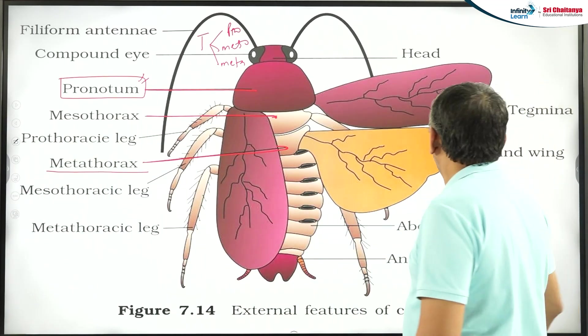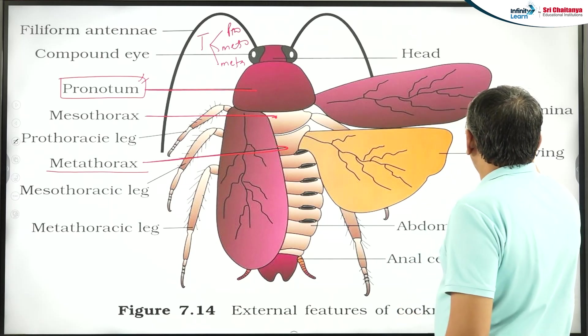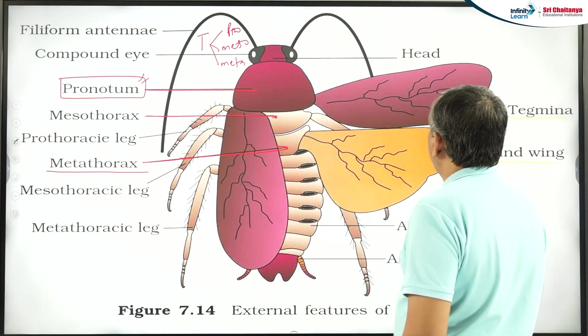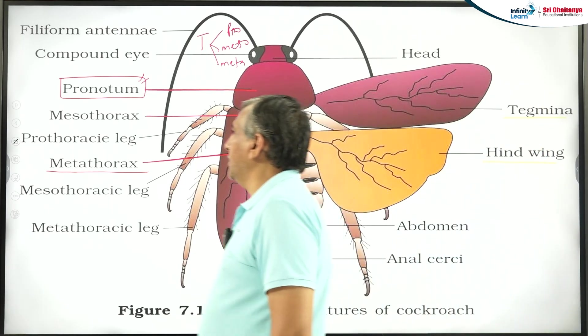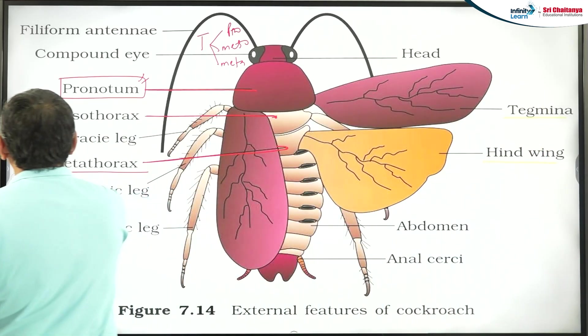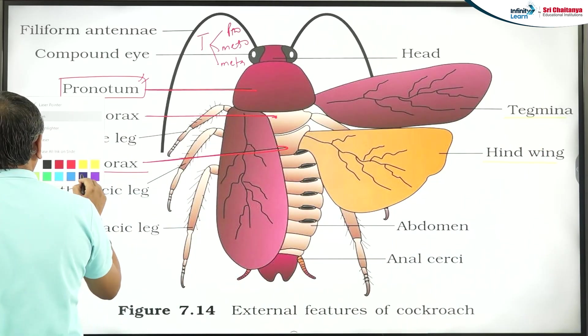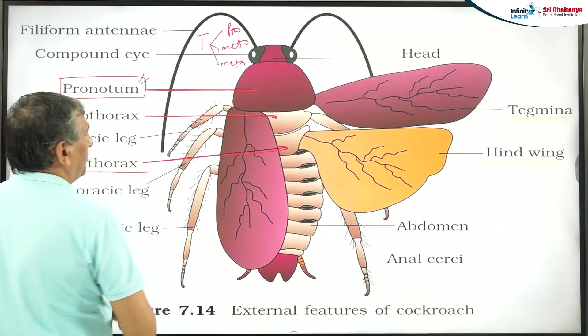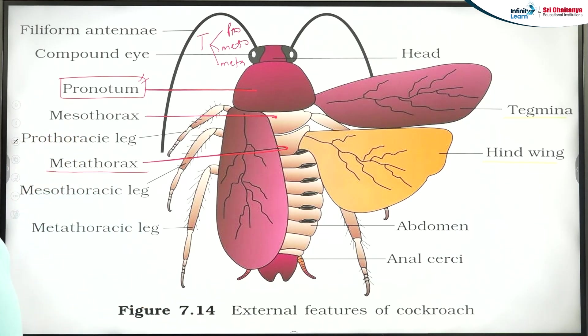Cockroaches are having two pairs of wings. The name of the two pairs of wings: one is known as the mesothoracic wing and one is known as the metathoracic wing.